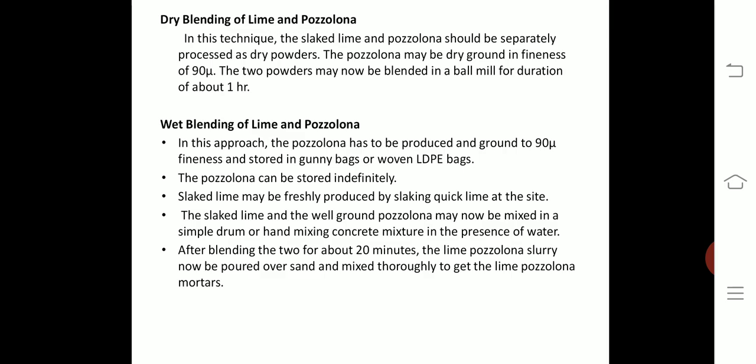In the wet blending approach, pozzolano is produced, ground to 90 micron fineness, and stored in gunny bags or woven LDPE bags indefinitely. Slaked lime may be freshly produced by slaking quicklime at the site. The slaked lime and well-ground pozzolano are mixed in a simple drum or hand-mixing concrete mixer in the presence of water at the site. After blending for about 20 minutes, the lime pozzolano slurry is poured over sand and mixed thoroughly to obtain lime pozzolano mortars. In the next class, we will study properties and uses and fly ash as a pozzolano material.